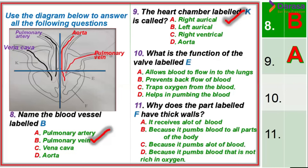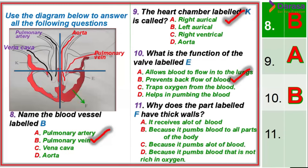Question 10: The function of the valve labeled E — valves prevent backflow of blood, so the correct answer is to prevent backflow. Question 11: Why does part F have thick walls? The correct answer is because it pumps blood to all parts of the body at pressure. That is why arteries do not have valves.